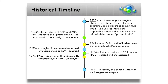In 1971, Vane, Smith, and Willis determined that the drug aspirin blocks prostaglandin biosynthesis. This enabled the discovery of the enzymes that actually formed these molecules. Prostaglandin synthase, also termed cyclooxygenase, or simplified COX, were identified as the enzyme that forms prostaglandins. The intermediate PGG2 was determined, and other products of the cyclooxygenase enzyme, such as thromboxane B2 and prostacyclin, were all discovered in the mid-1970s.